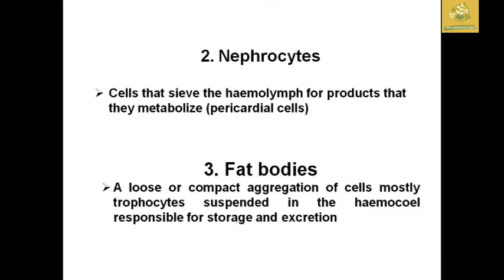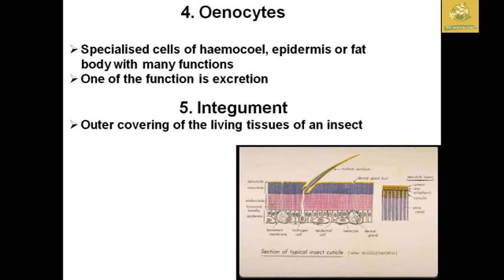The next organ is nephrocytes. These are cells that filter the hemolymph for waste products — they metabolize and are also known as pericardial cells. They collect waste products from the blood. Another important organ is the fat bodies — a loose or compact aggregation of cells, mostly trophocytes, suspended in the hemocoel and responsible for the storage and excretion of fatty substances. Fat bodies are responsible for storing excess waste from the insect body.